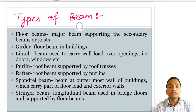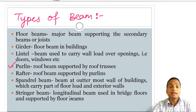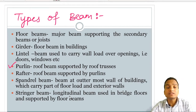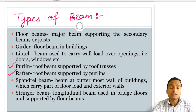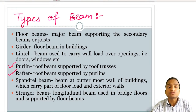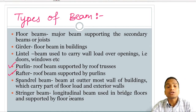Purlins are beams which connect two consecutive roof trusses. We will also see how purlins are designed in coming videos. Above the purlin, another series of beams called rafters are supported by the purlins. There is also the spandrel beam or cantilevered beam, commonly provided in chajjas. These beams are at the outermost wall of buildings and they carry the floor load and exterior walls.